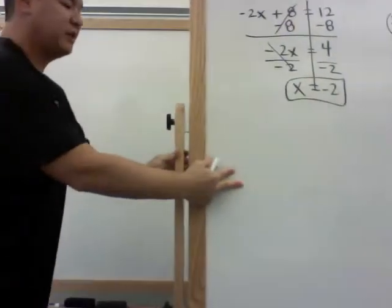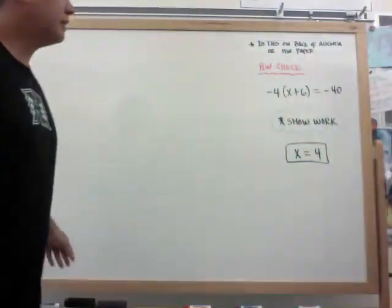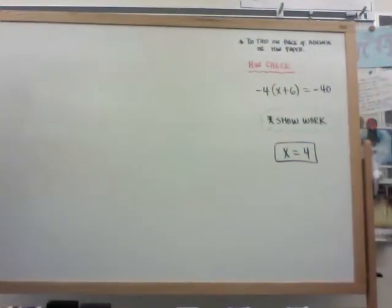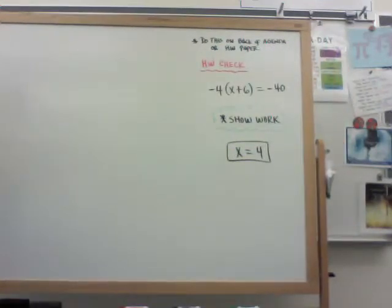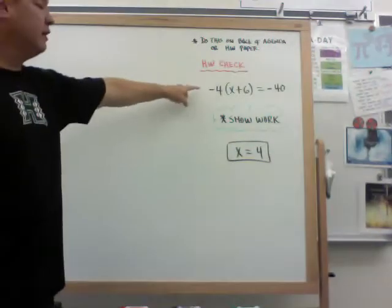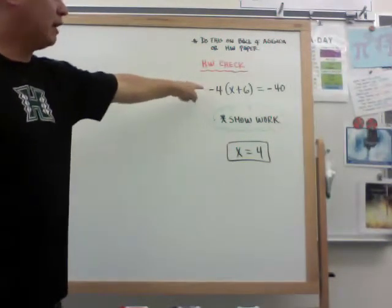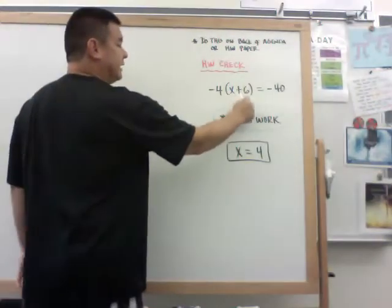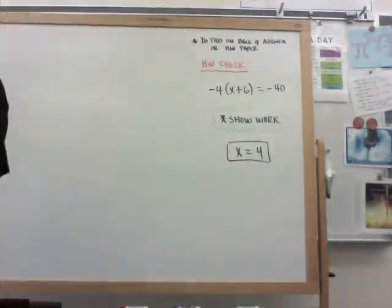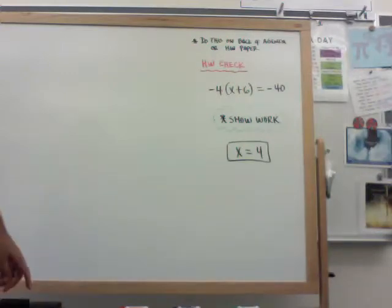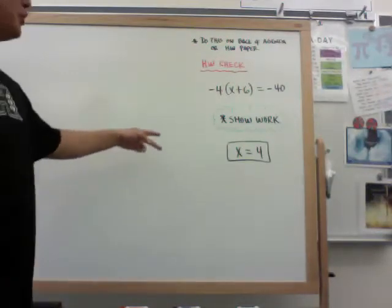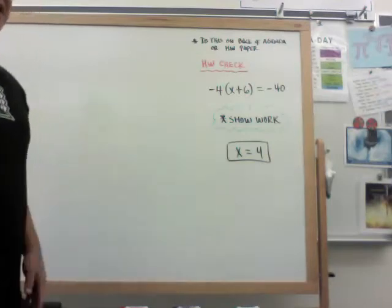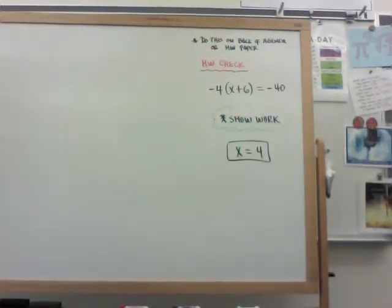So here's the homework check I want you to do. I do want you to do this on the back of your agenda, or on your homework. Negative 4 times the quantity x plus 6 is equal to negative 40. Your answer will come out to 4, or should come out to 4. So just show the work, and show how you got there. Hope this helps.